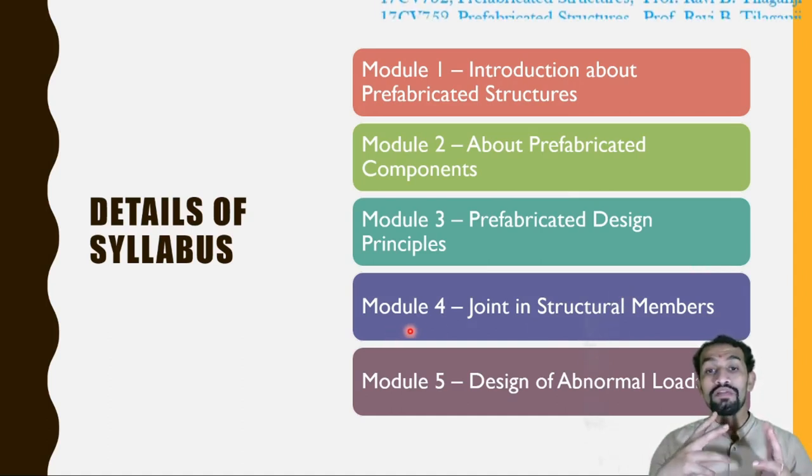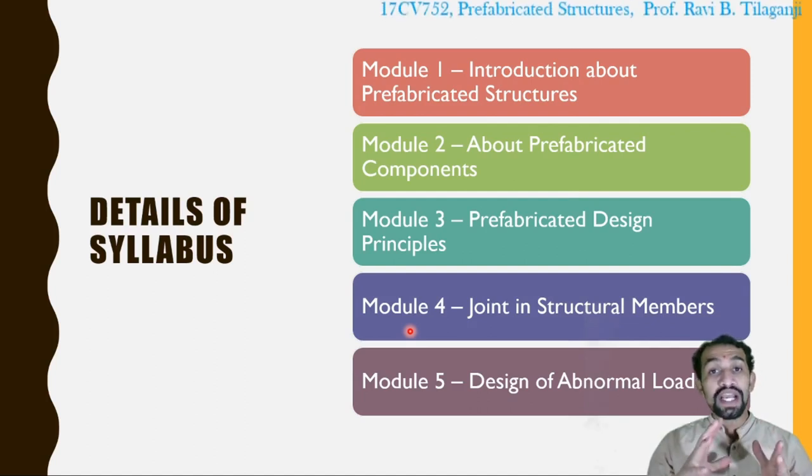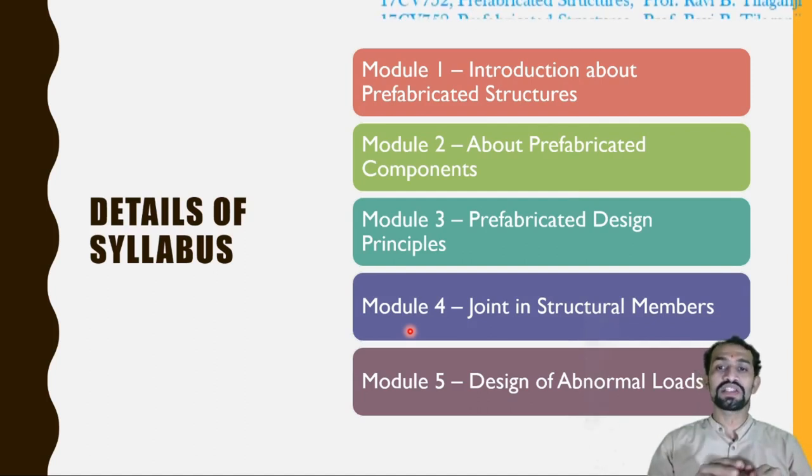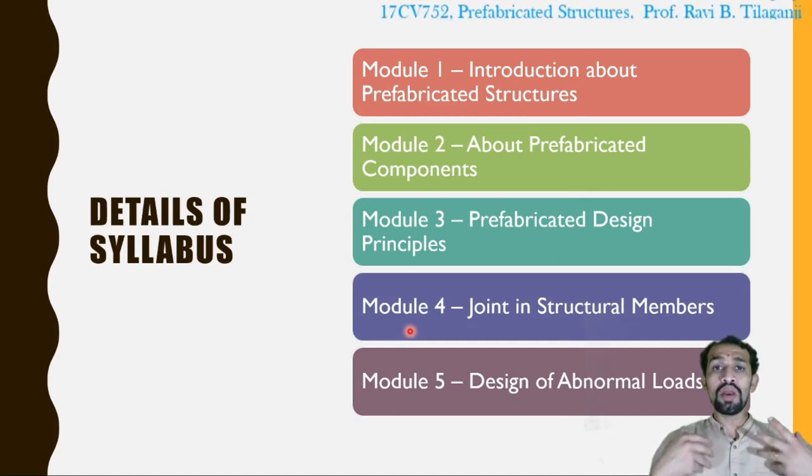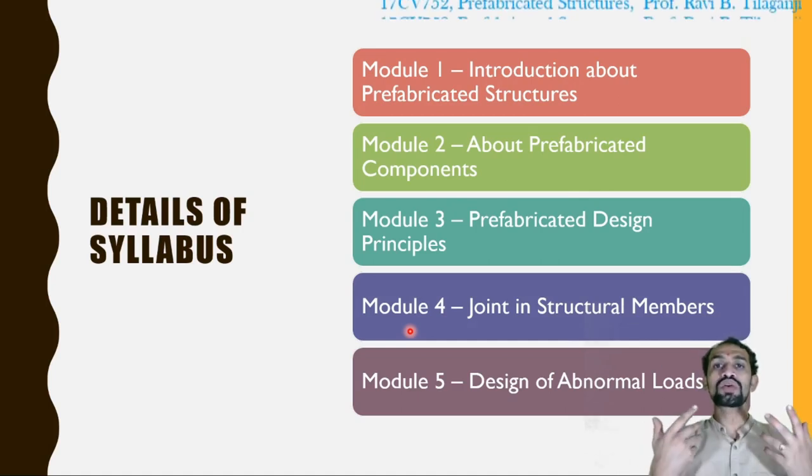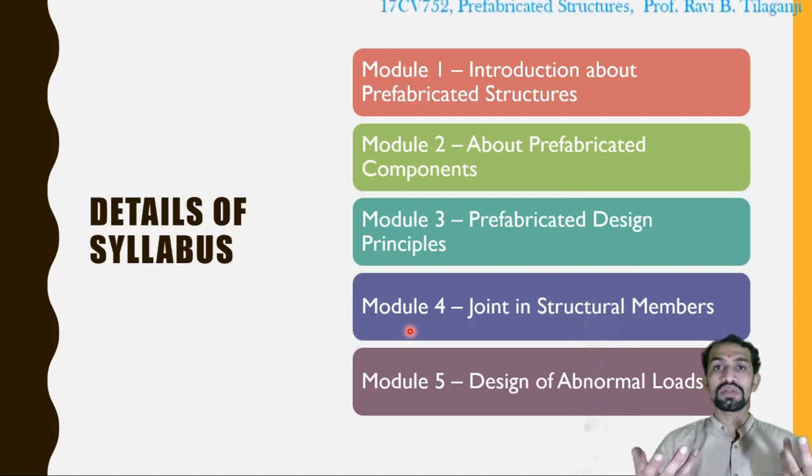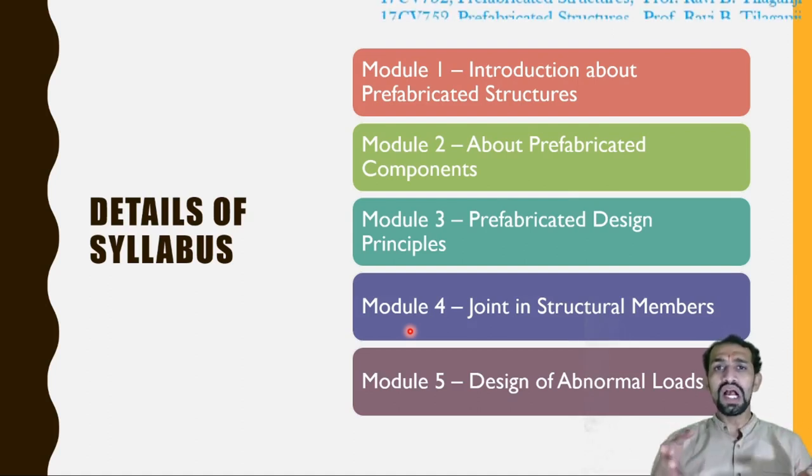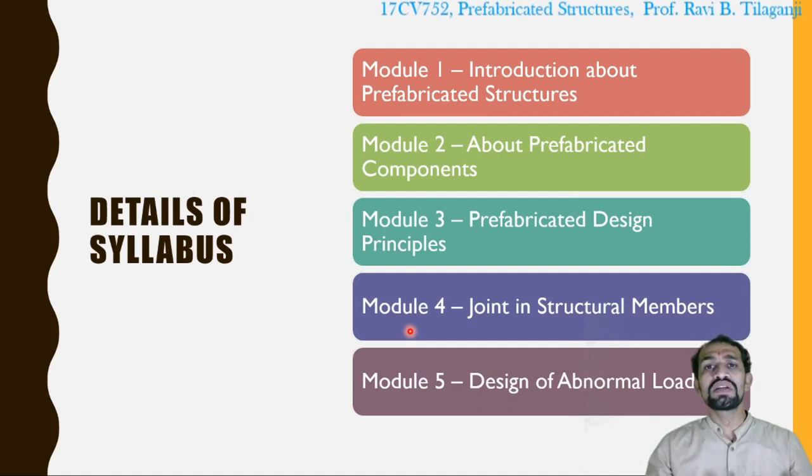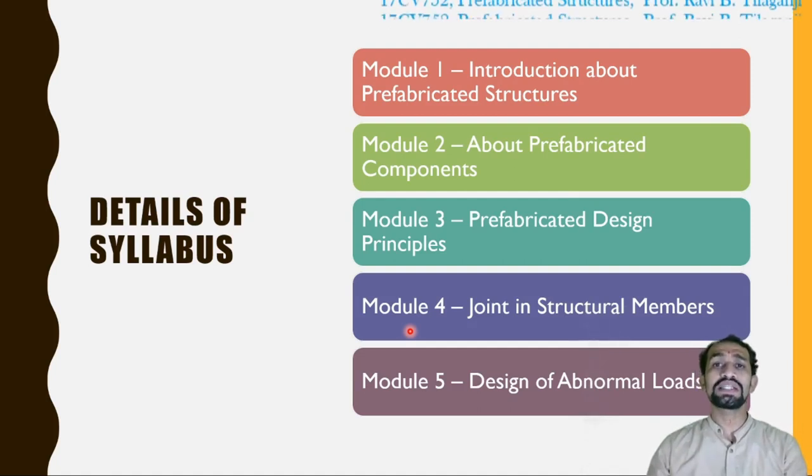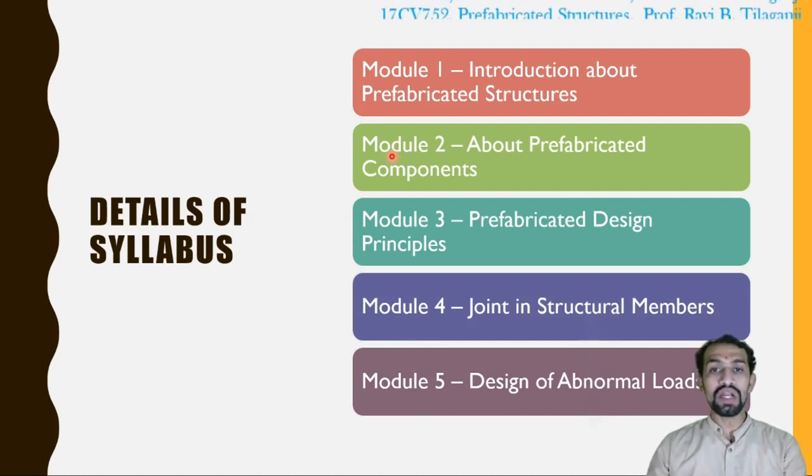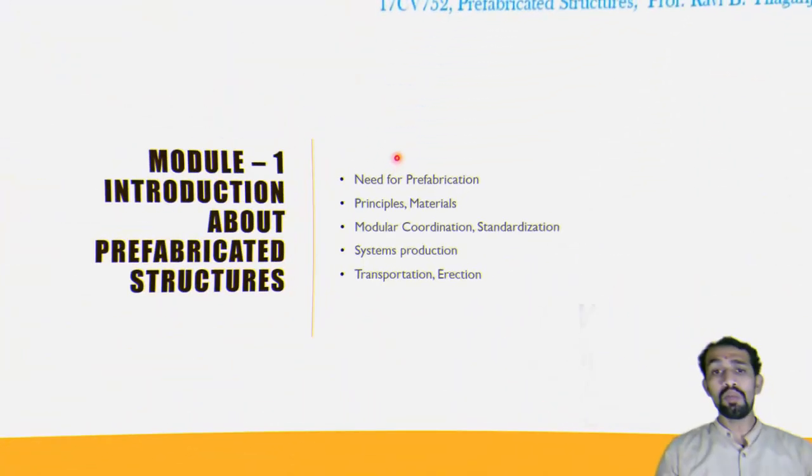Coming to module number 5, design of the prefabricated structures for abnormal loads. Abnormal loads means what? We are going to consider something called as industrial loads, earthquake loads. If they are there, then we will consider some more also. Like this, the syllabus in small brief. Detail of the syllabus into the things.